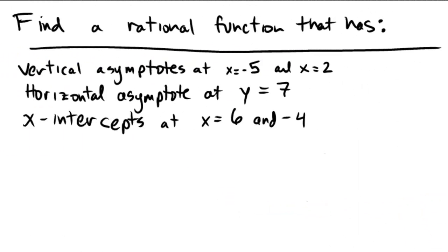Let's find a rational function that has the following properties. We're going to concentrate on vertical asymptotes, on horizontal asymptotes, and on x-intercepts.